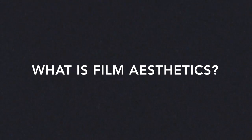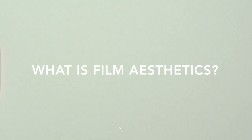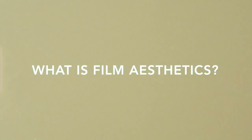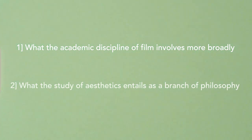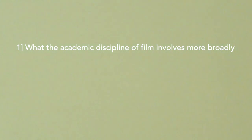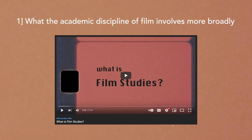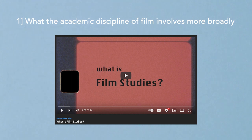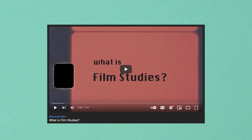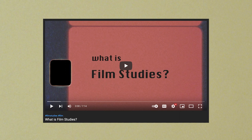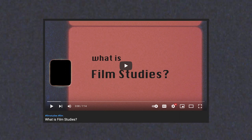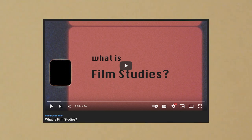This video is part one of a two-part series that seeks to introduce what the academic study of film aesthetics entails. However, before broaching this topic, it's important to establish: one, what the academic discipline of film studies involves more broadly, and two, what the study of aesthetics entails as a branch of philosophy. Fortunately, I've already covered the former in a video essay titled 'What is Film Studies,' which I would recommend watching before continuing with this one. This video essay is available on the Cinema Scholar YouTube channel, and I've provided a link in the description box below and at the end of this video.